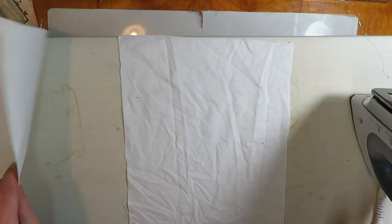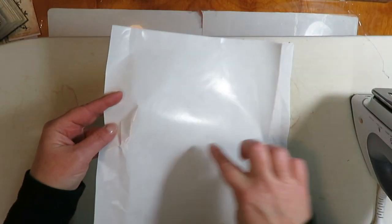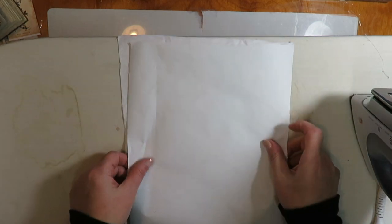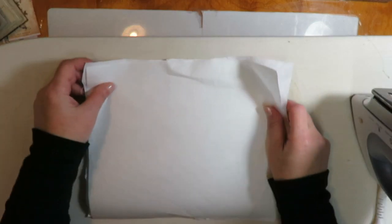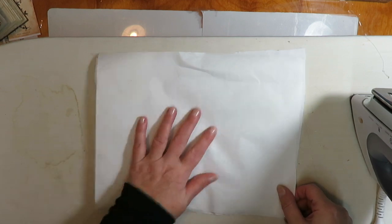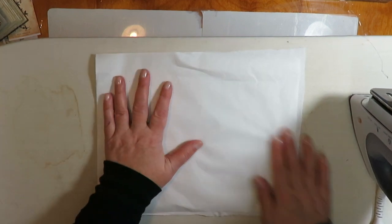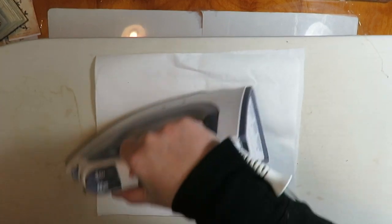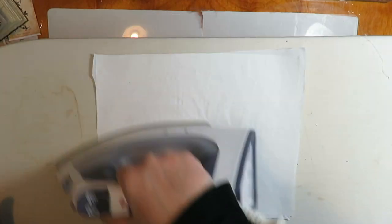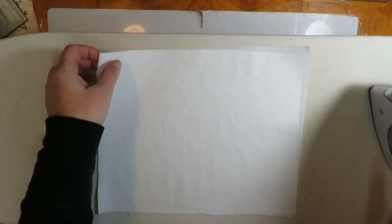You want your iron on the linen cotton setting, the highest setting. You're going to put your freezer paper shiny side down onto your fabric this way and just iron it on. It's just a few seconds so it's adhered.